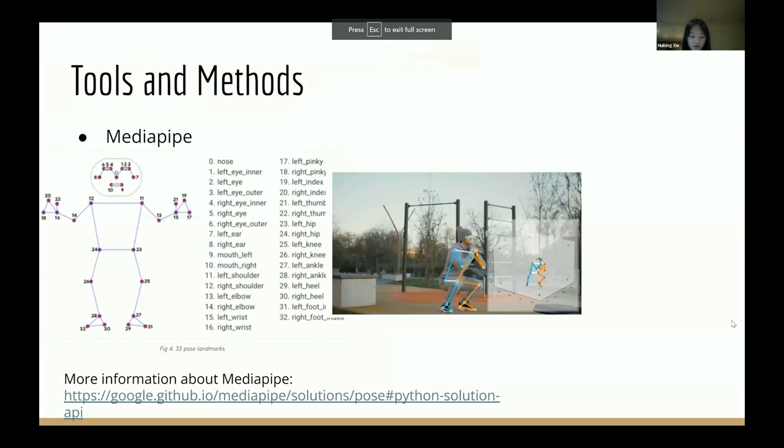We use MediaPipe Pose to extract the landmarks of the body. MediaPipe Pose is an ML solution for high fidelity body pose tracking, inferring 33 3D landmarks and background segmentation masks on the whole body from RGB video frames, utilizing our BlazePose research that also powers the ML Kit Pose Detection API.